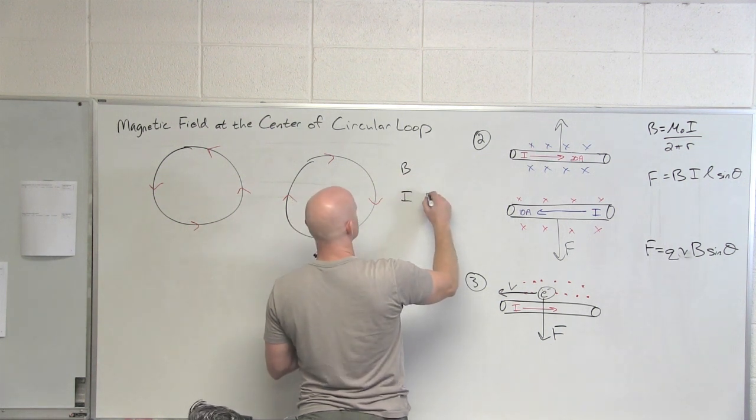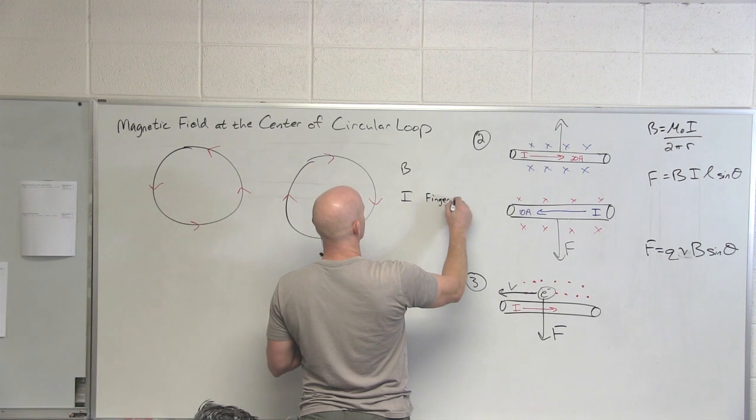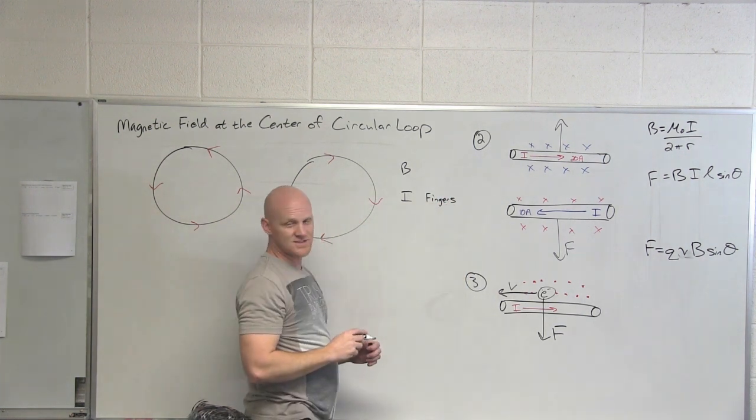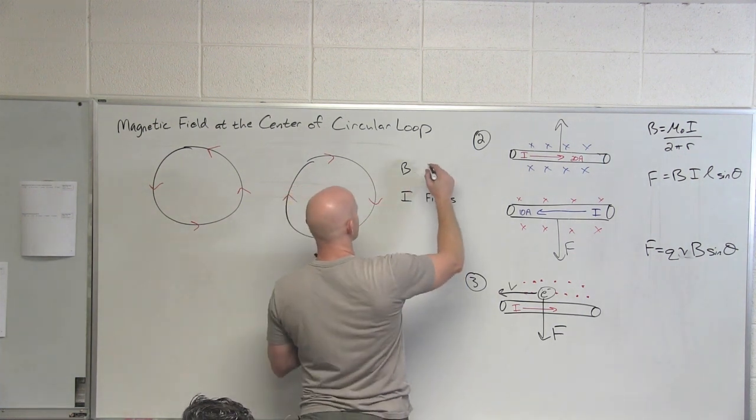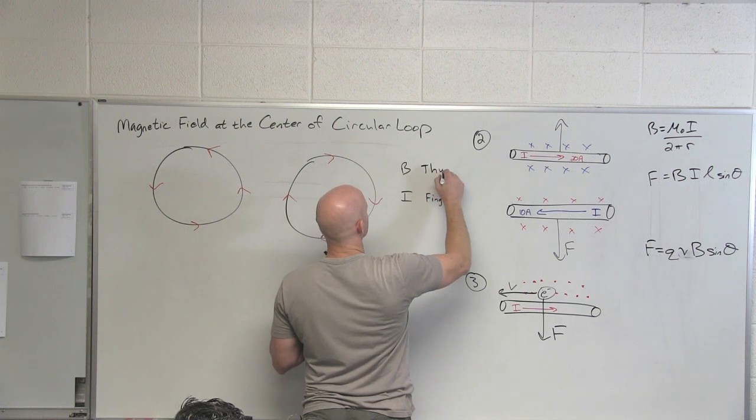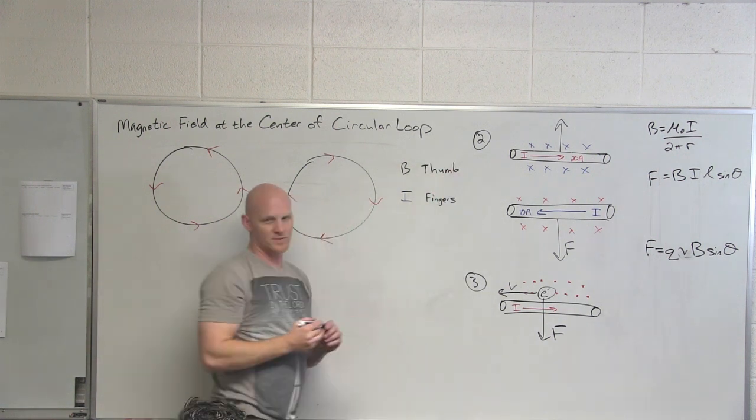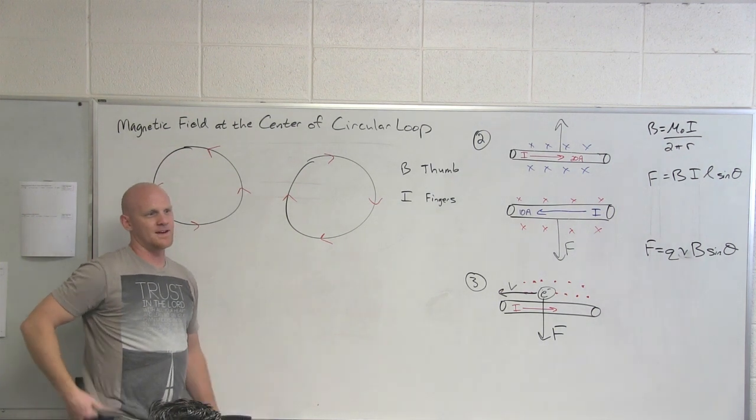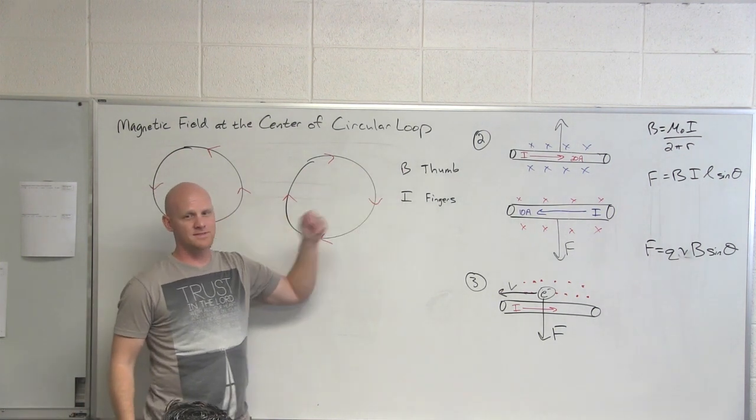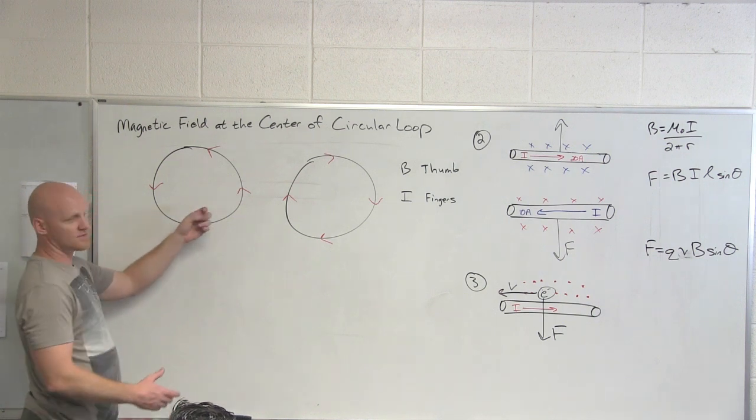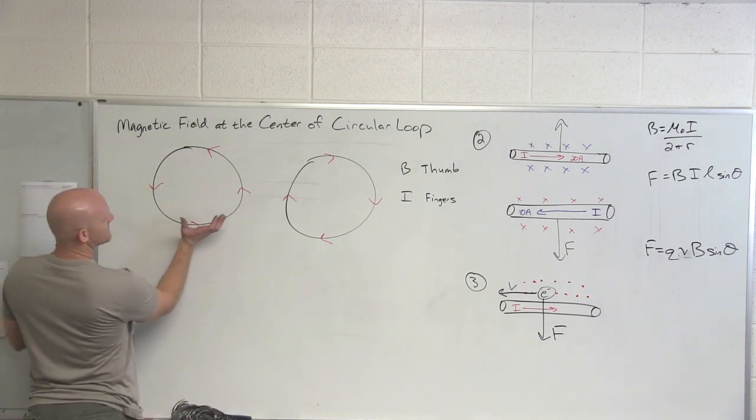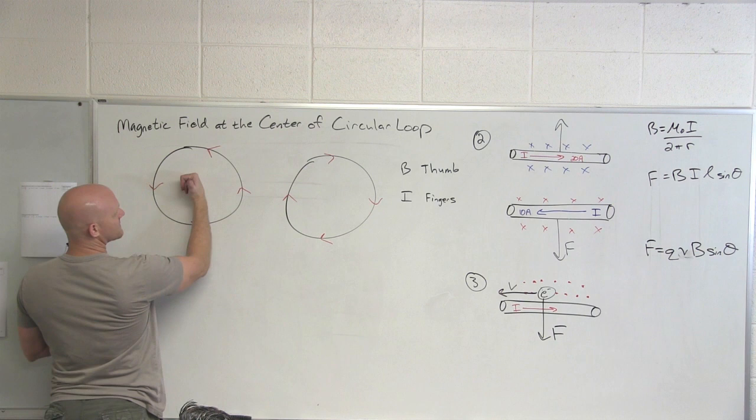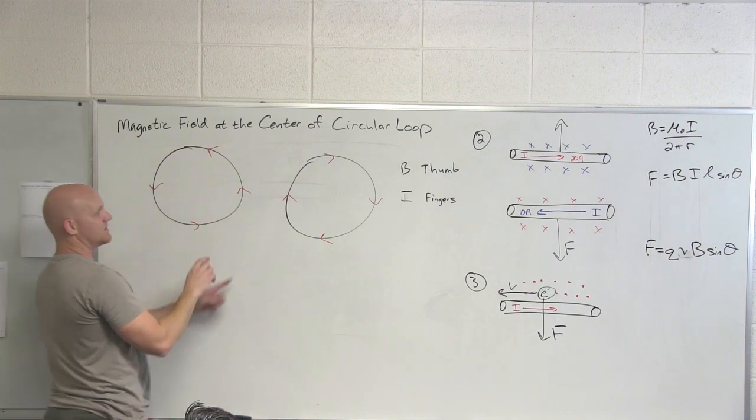If you take and put your fingers in the direction of the current in a loop, then your thumb will point the magnetic field. Why don't I like this one as much? It's the opposite way we've defined the thumb and fingers in the past, so it's a special case for the circular loop. In this case if you actually went with the circular loop, your thumb at the center would point out.